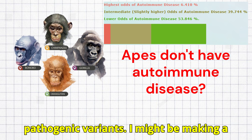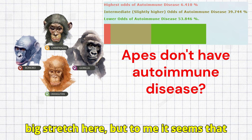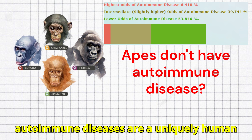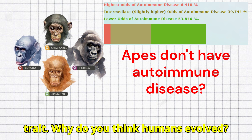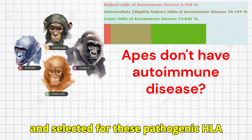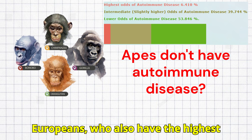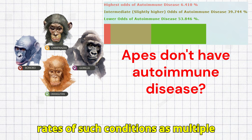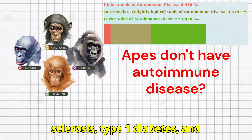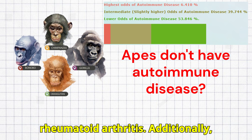It seems that autoimmune diseases may be a uniquely human trait. Why do you think humans evolved and selected for these pathogenic HLA variants? They are especially common in Europeans, who also have the highest rates of conditions such as multiple sclerosis, type 1 diabetes, and rheumatoid arthritis.